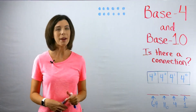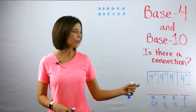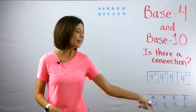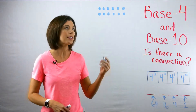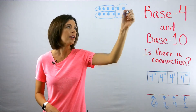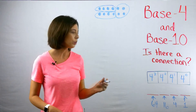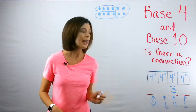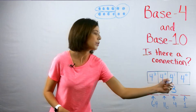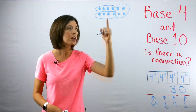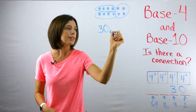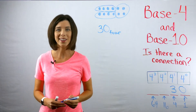Now let's go back to our dots. Can we count by ones? Yes. Can we count by groups of four? Let's see — I've got four here, four here, and four here, so I have three groups of four. I'll write a three in the fours place and zero ones, since everything grouped evenly. This number is written as 30 base four.